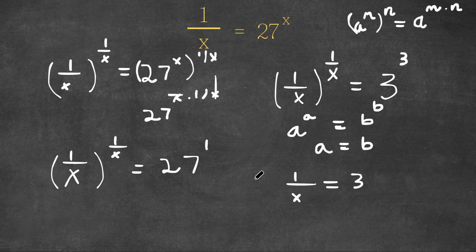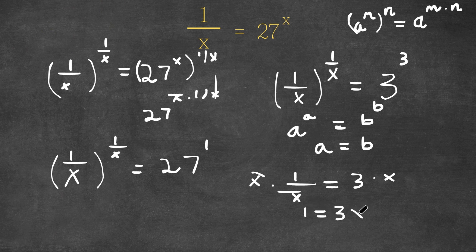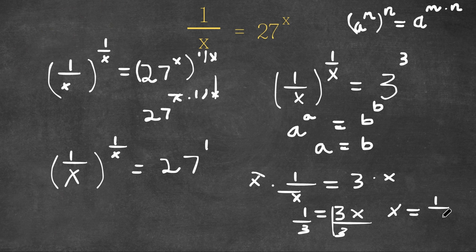If I multiply both sides by x, these cancel out and I get 1 is equal to 3x. Now, if I divide both sides by 3, these cancel out and I get x is equal to 1 over 3. So this is our answer.